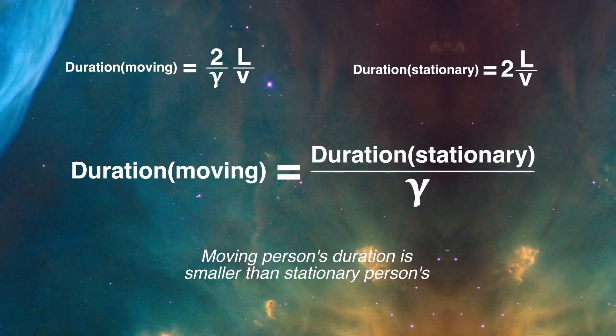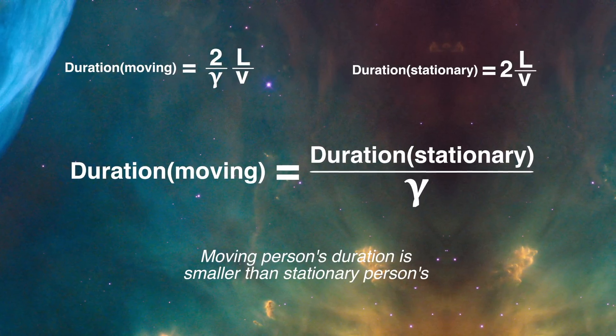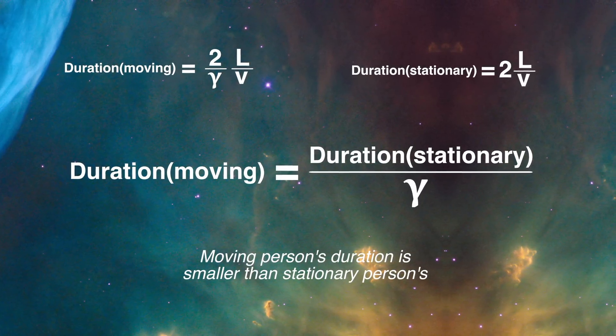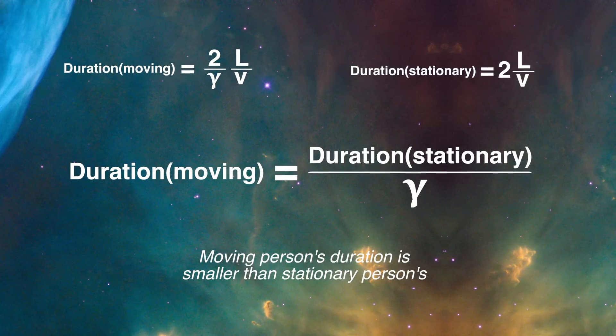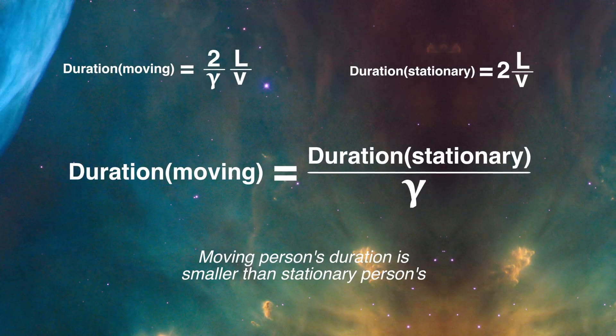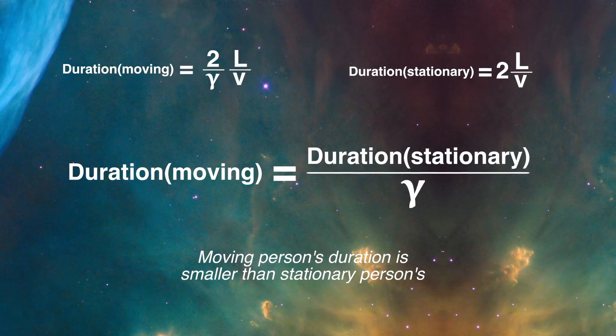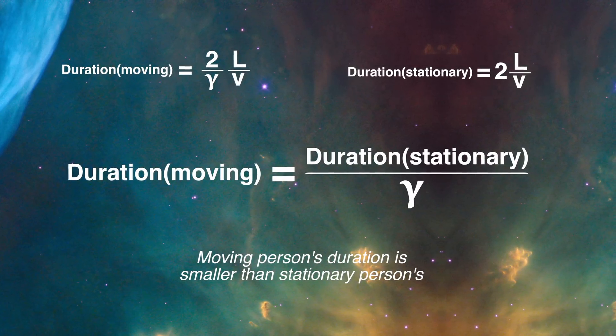Okay, so we're out of the math. What does this tell us? Since gamma is a number that is always greater than or equal to one, that says that the moving person's duration is smaller than the stationary person's duration. That's just what it means.